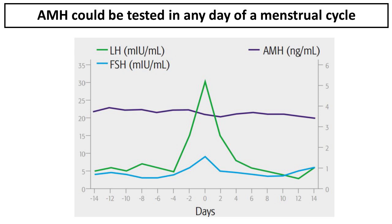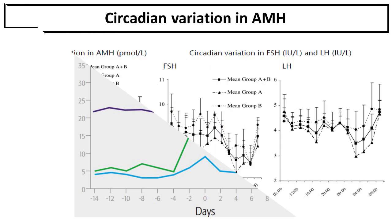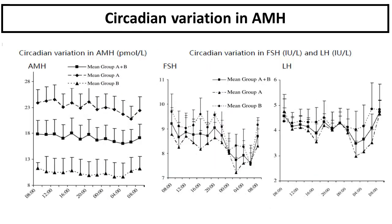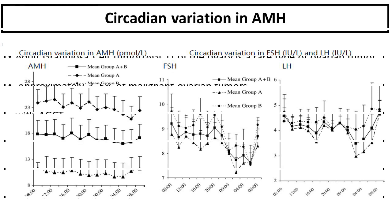Unlike other reproductive hormones, AMH doesn't fluctuate much throughout the month. Circadian variation of AMH is also very low compared with FSH and LH.